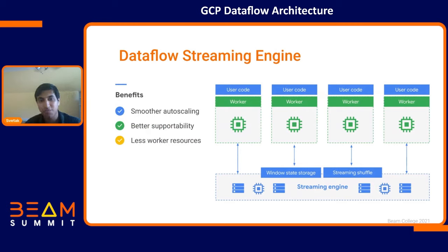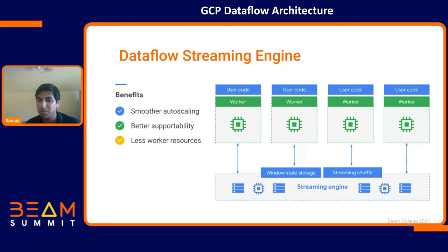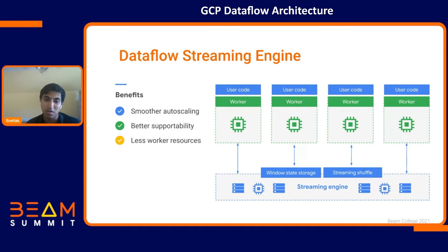The Dataflow streaming engine is analogous to the shuffle service but for streaming Dataflow jobs. If you have heavy operations in a streaming pipeline, you can send them to the streaming engine to carry out intensive computations, then the results get sent back and the pipeline continues. Key benefits include smoother autoscaling and lower overall resource consumption. For computationally intensive streaming pipelines, enabling the streaming engine is often the best way forward.